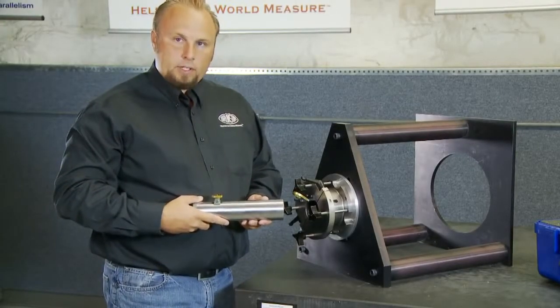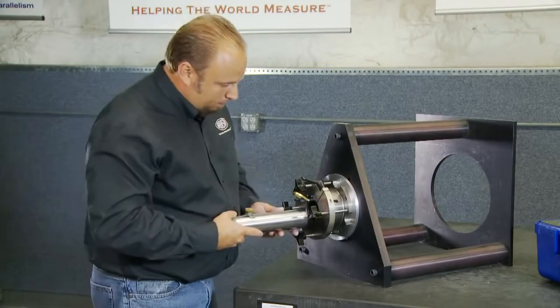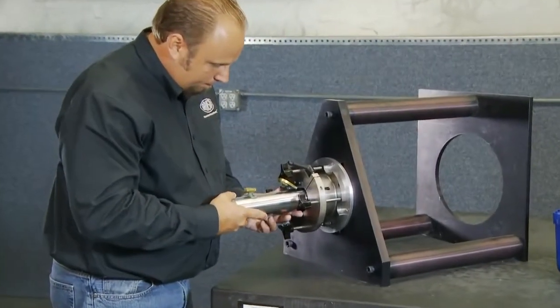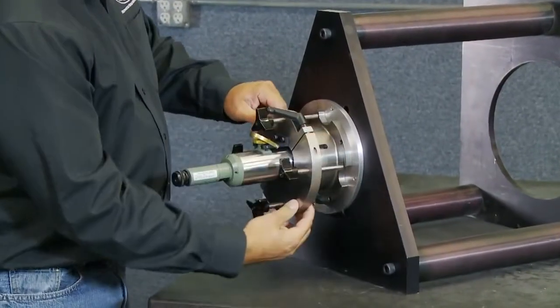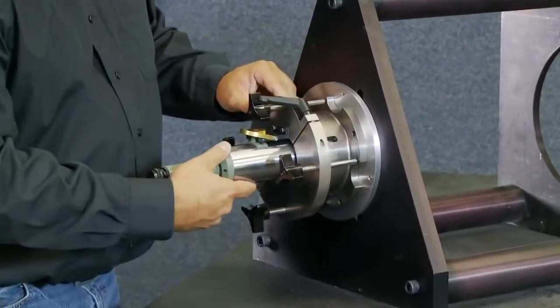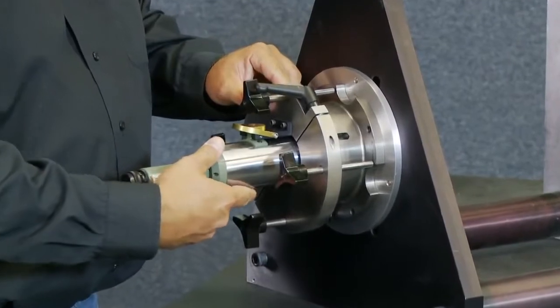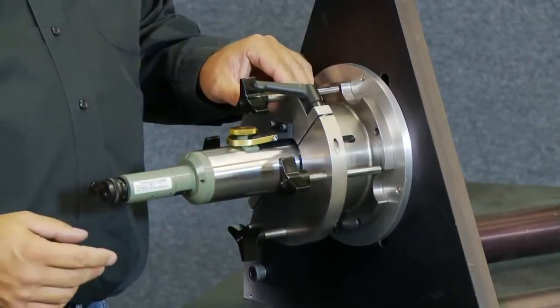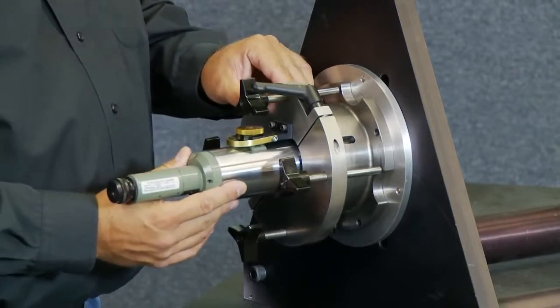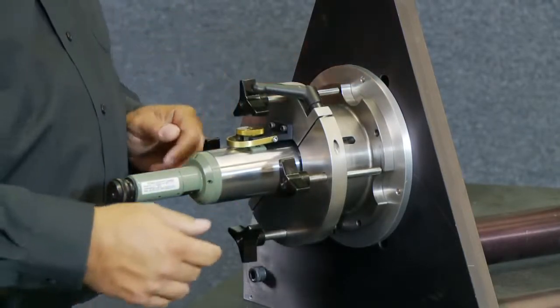What we're going to do now is properly install the 2062 alignment scope. Now, you can see that this fixture is still loose on here and the scope still easily slides back and forth. Go ahead and push down the safety saddle. That way, if you are in the vertical orientation, the scope obviously cannot fall out of the fixture.